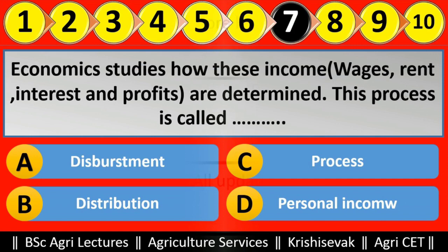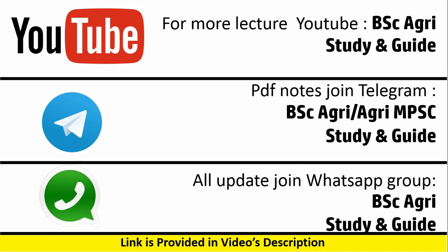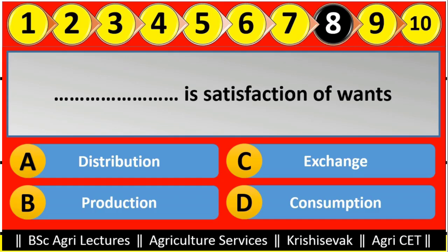Question 7 options are: disbursement, distribution, process, personal income. The right answer is distribution, that is option B. Economics studies how incomes — wages, rent, interest, and profits — are determined; this process is called distribution.